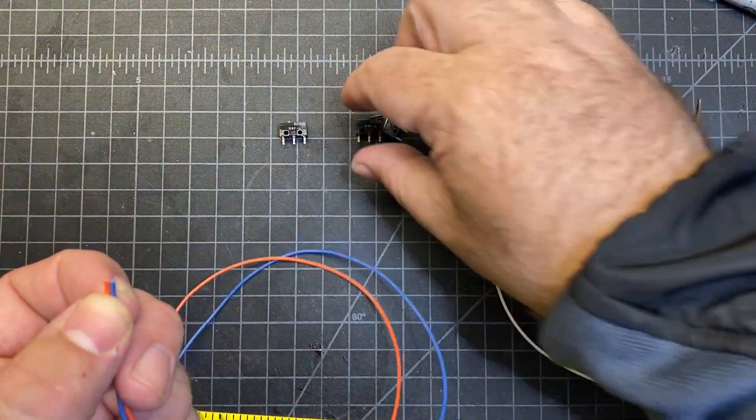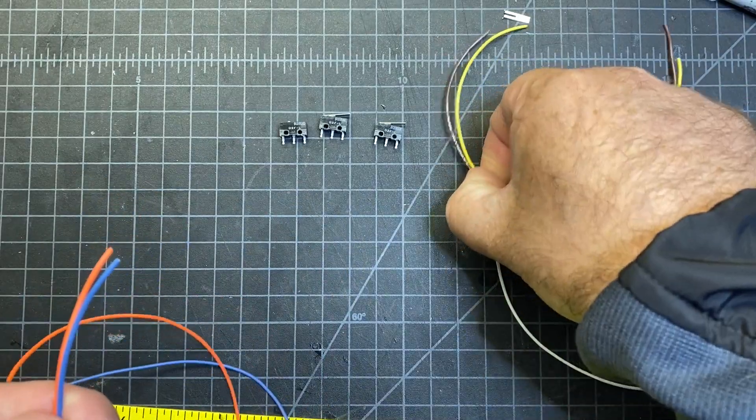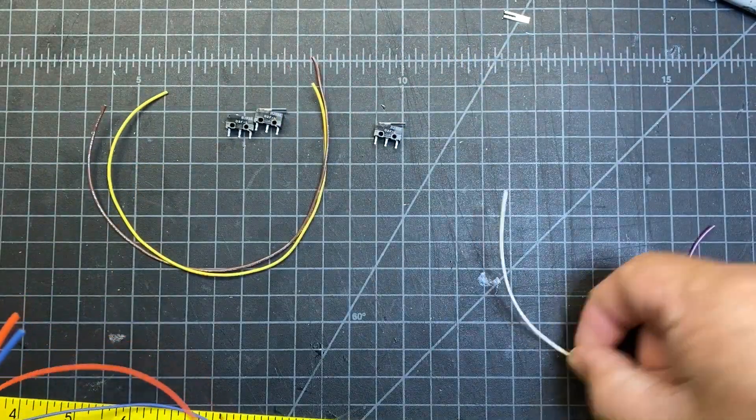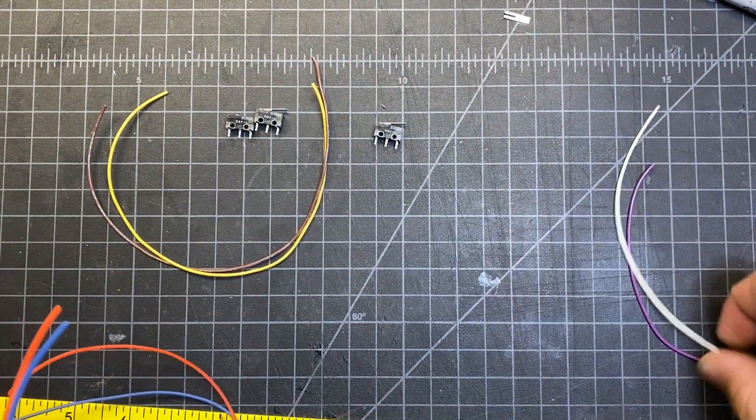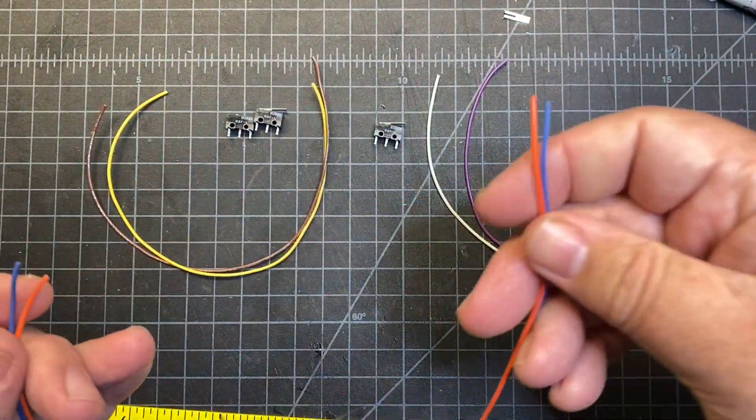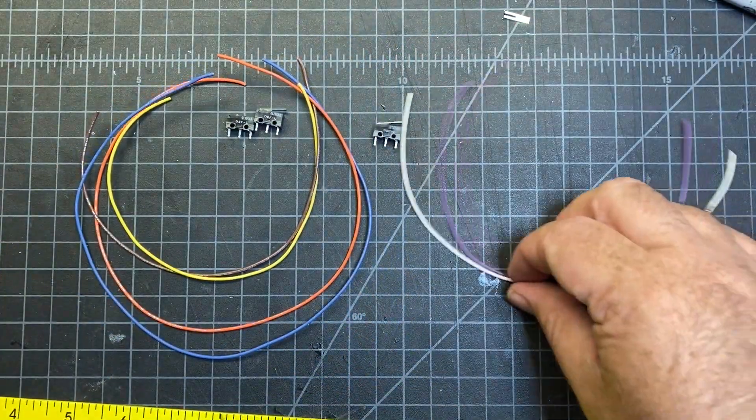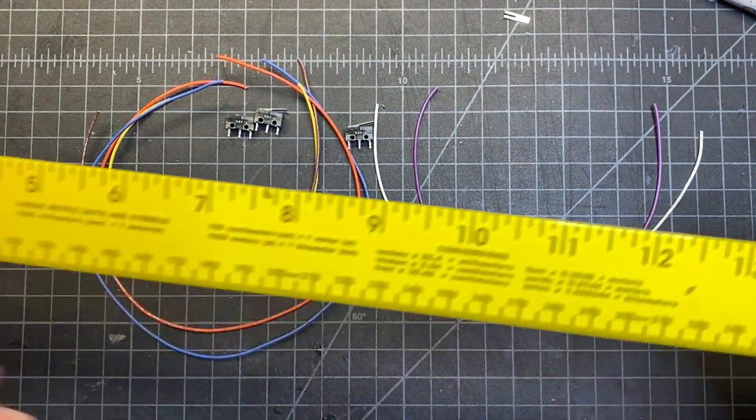You're also going to need some wires for these end stops. For the Z, you're going to need 25 centimeters. 25 centimeters for the Y as well. And then you're going to need 400 or so for the X. So I've got all those pre-cut. I'll use my handy-dandy meter stick here.